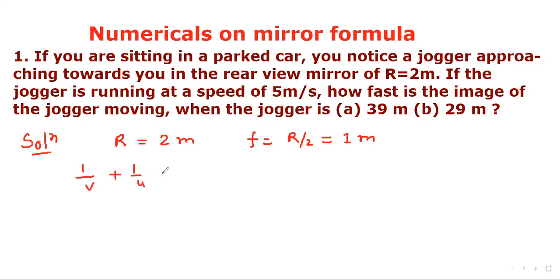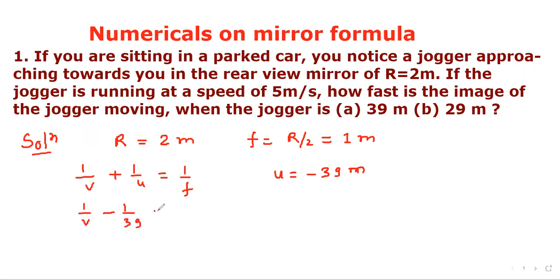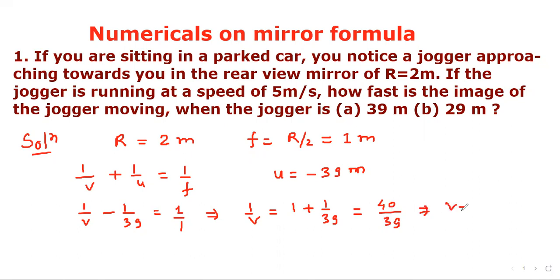If the jogger is running at a speed of 5 meters per second, how fast is the image moving when the jogger is 39 meters away? We use mirror formula: 1/v + 1/u = 1/f. With u = −39 m and f = 1 m, we get 1/v = 1 + 1/39 = 40/39, so v = 39/40 meter.